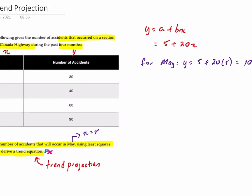And that's it. That's using your calculator with a very simple set of data to determine the a and b variables to construct your trend projection equation.